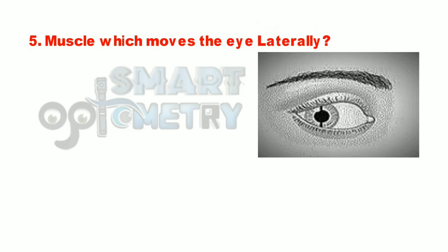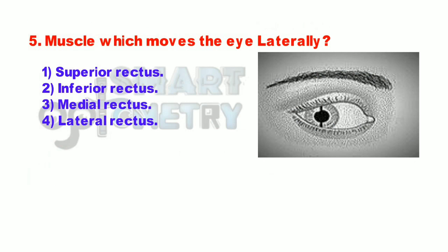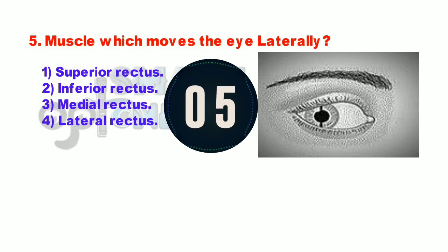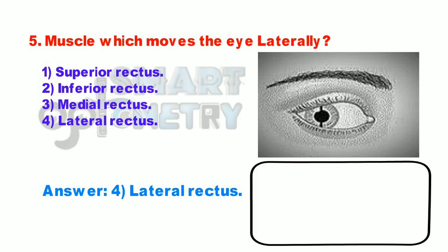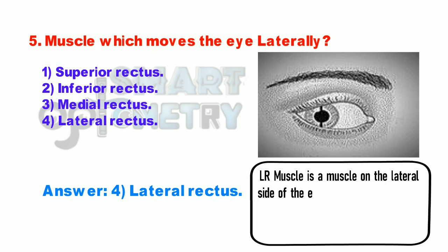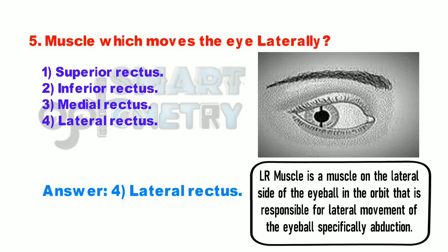Q5. Muscle which moves the eye laterally is: 1. Superior rectus. 2. Inferior rectus. 3. Medial rectus. 4. Lateral rectus. Lateral rectus muscle is a muscle on the lateral side of the eyeball in the orbit that is responsible for lateral movement of the eyeball, specifically abduction.